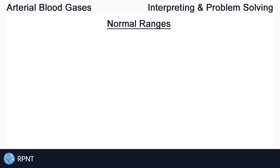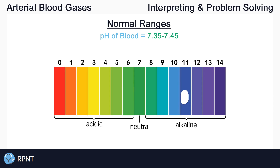The first and most important thing to know about solving ABGs is to know what the normal ranges are for pH, PaCO2, and HCO3. Here are the normal ranges that we need to know for an ABG problem. First, we have pH. The normal range for the pH of blood, which tells us if the blood is acidic or basic, is 7.35 to 7.45.